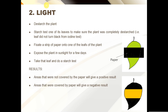Next up is light. First, destarch the plant by leaving it in darkness for 48 hours, and do a starch test on one of its leaves to confirm the plant is completely destarched. Then fixate a strip of black paper onto one of the leaves of the plant — as shown in the image. Expose the plant to sunlight for a couple of days, then take that leaf, remove the paper, and perform the starch test on it.